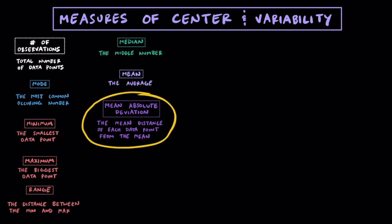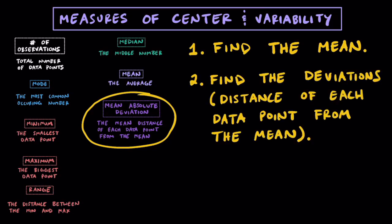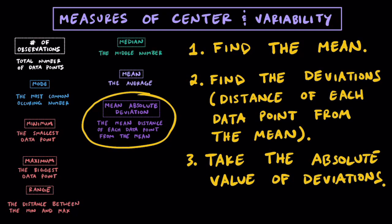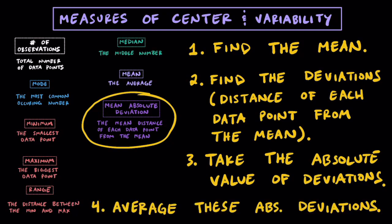Finally, we have the mean absolute deviation, or MAD for short. This one typically makes everybody mad because of how long it actually takes. To calculate the MAD, first we're going to have to find the mean, then we're going to have to find the deviations — the distance of each data point from the mean. To find these deviations, we'll take each observation and subtract the mean from it. You're going to notice that some deviations are positive and some are negative. So to make them all positive, we take the absolute value of each deviation. Finally, once we have all these positive absolute deviations, we take the average or mean of all of them — and that gives you your mean absolute deviation.